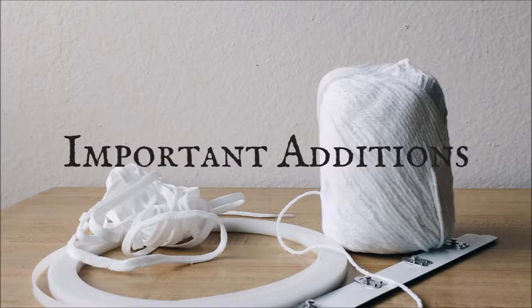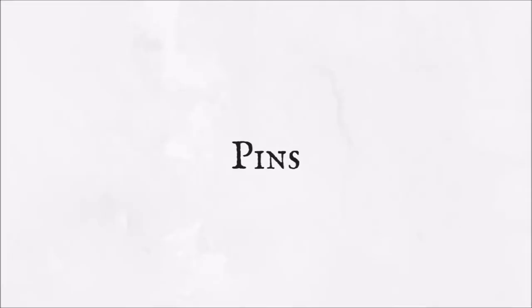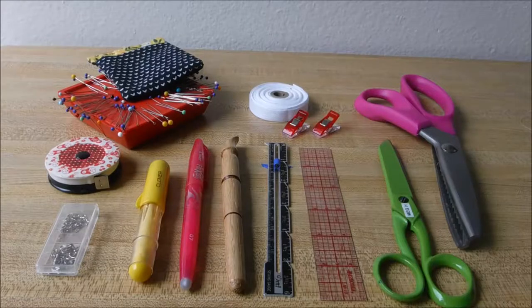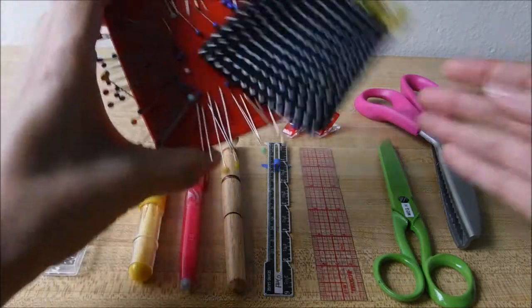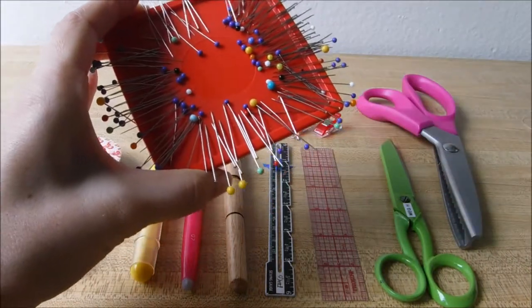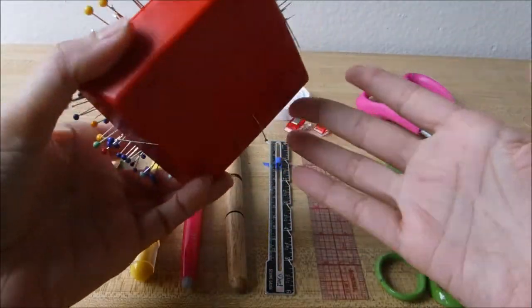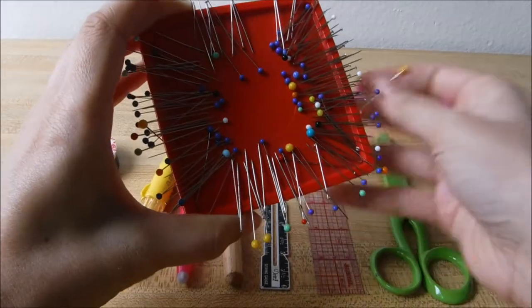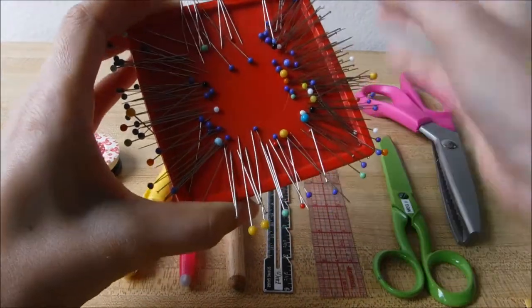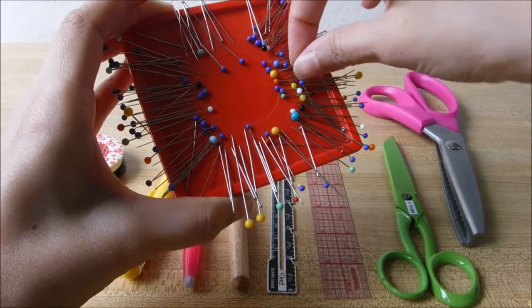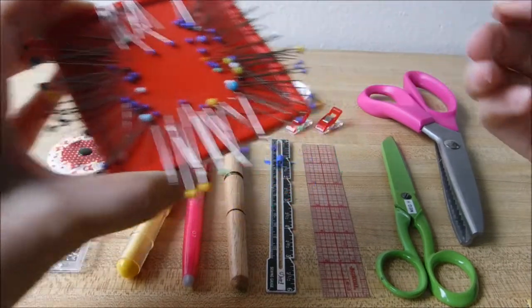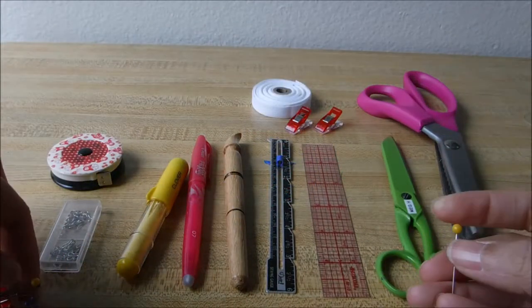These items aren't necessary, but make sewing much easier. Pins. I didn't include them in my basic tools because I have gotten away without using pins. I've forgotten them before. But I have them here on my little magnetic pin holder. I do have several different kinds. I've got glass head, plastic head, silk.